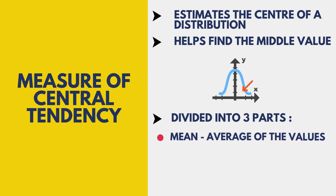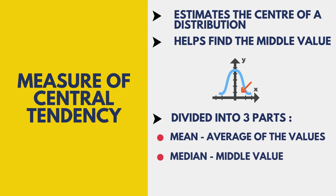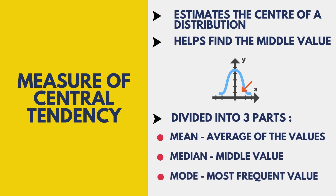Mean is the average of the values — it is generally the center around which the whole data set is spread. Median is the middle value of the ordered data set. And mode is the most frequent value in a data set.